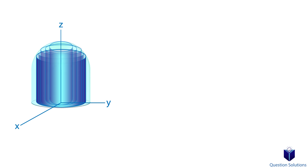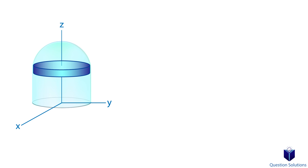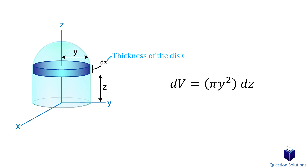For the shell method, the volume of the shell element is: z is the height and y is the radius. The next method is using a disk element. In this case, we place a bunch of disks and add it all up. The volume for it is: here, y is the radius. This method is a bit more tedious since we first have to determine the mass moment of inertia for the element and then integrate that value.